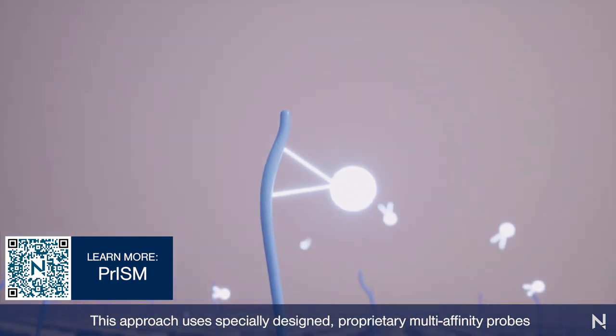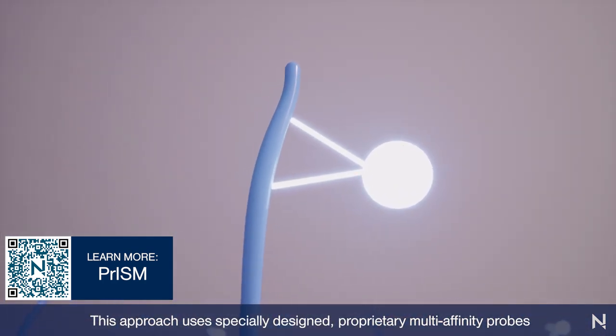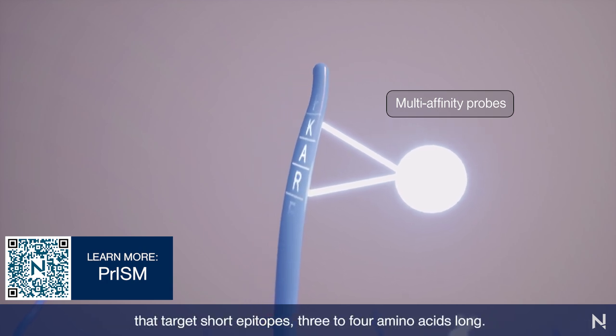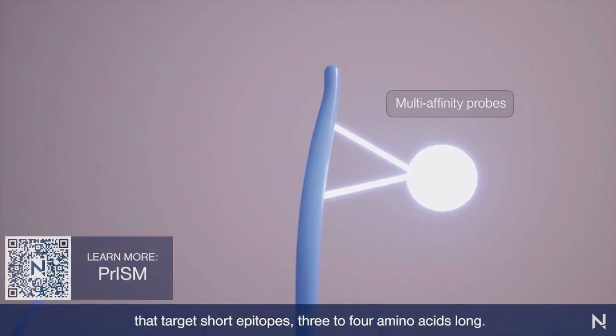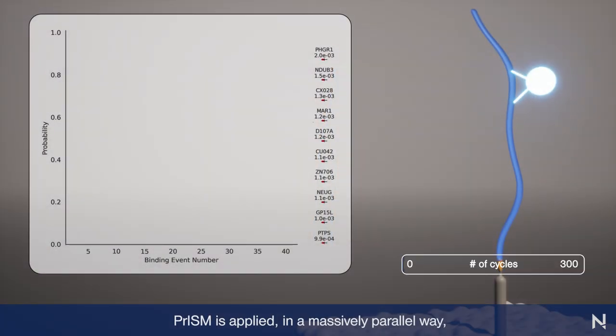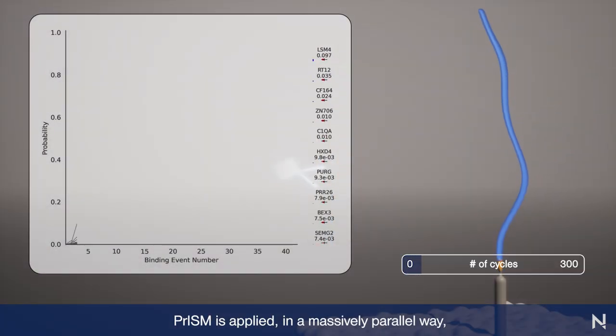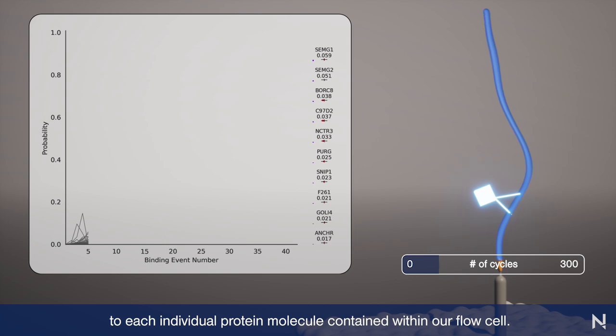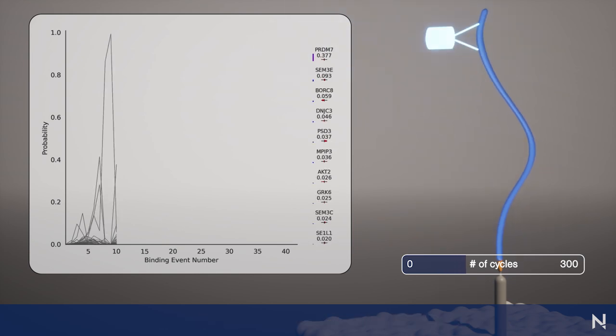This approach uses specially designed proprietary multi-affinity probes that target short epitopes three to four amino acids long. PRISM is applied in a massively parallel way to each individual protein molecule contained within our flow cell.